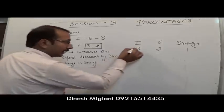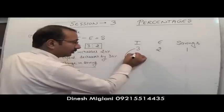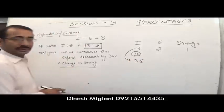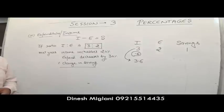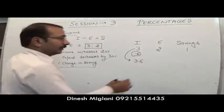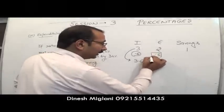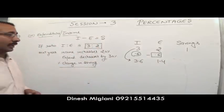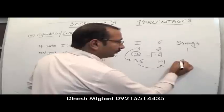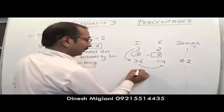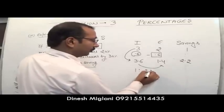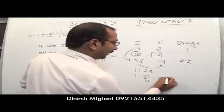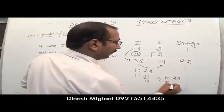Next year, income increases by 20%: 20% of 3 is 0.6, so income becomes 3.6. Expenditure decreases by 30%: 30% of 2 is 0.6 decrease, so expenditure becomes 1.4. New savings = 3.6 − 1.4 = 2.2. The ratio of old to new savings is 1:2.2, which simplifies to 10:22, or 5:11.